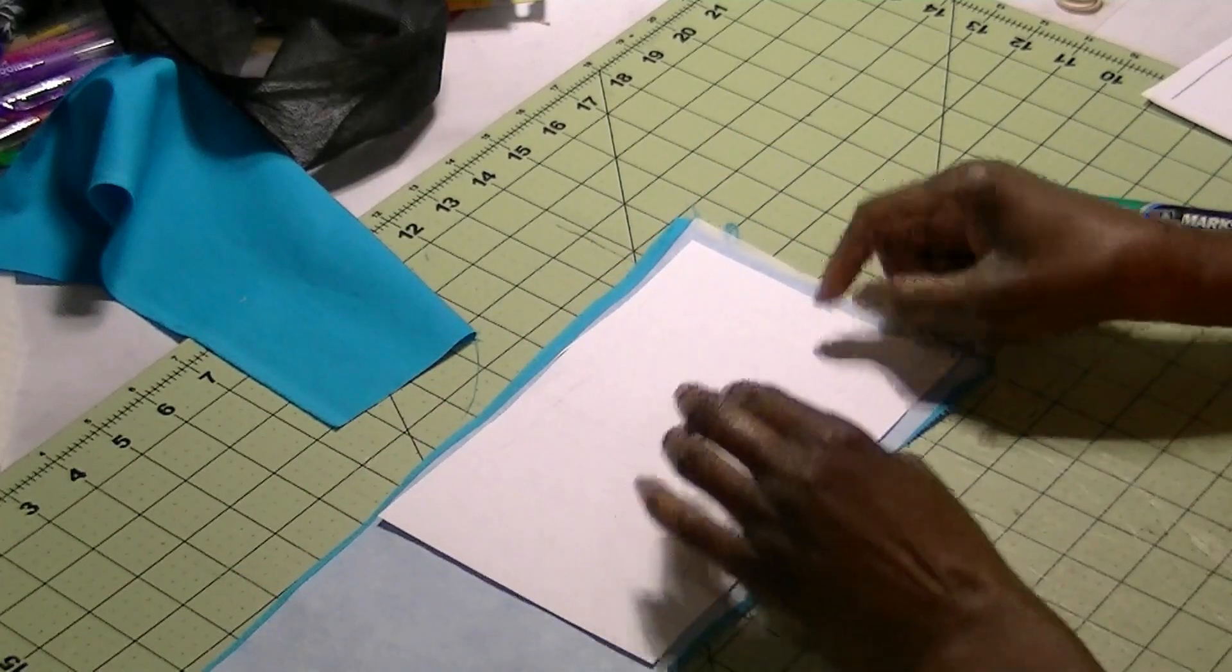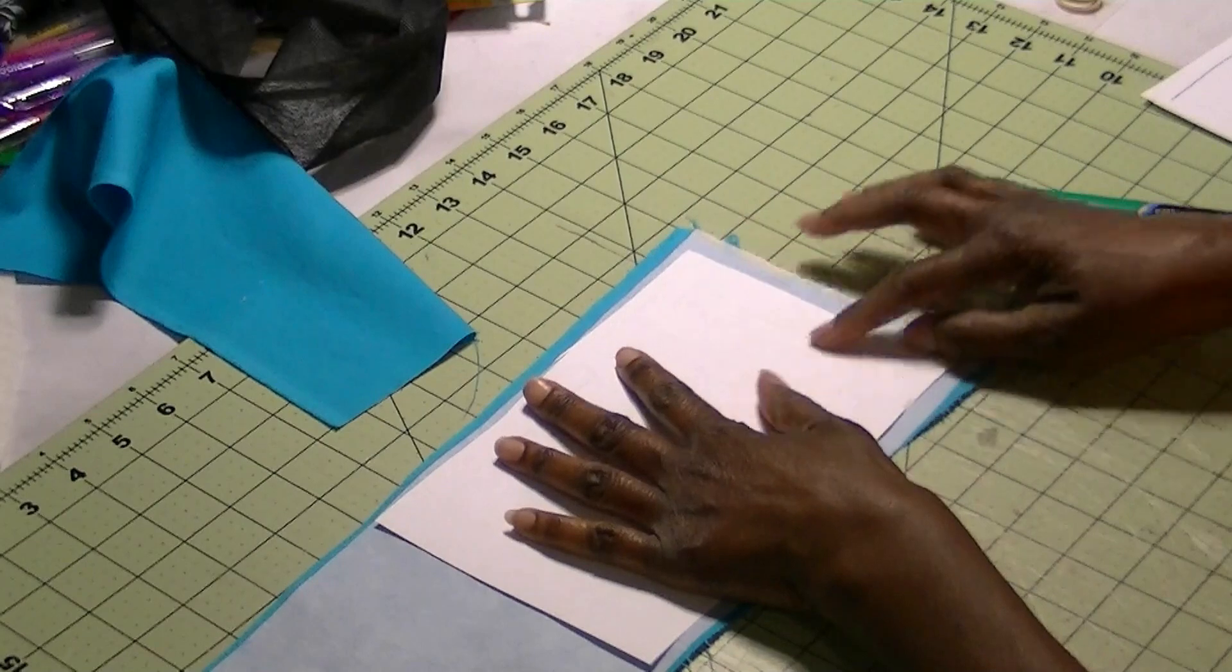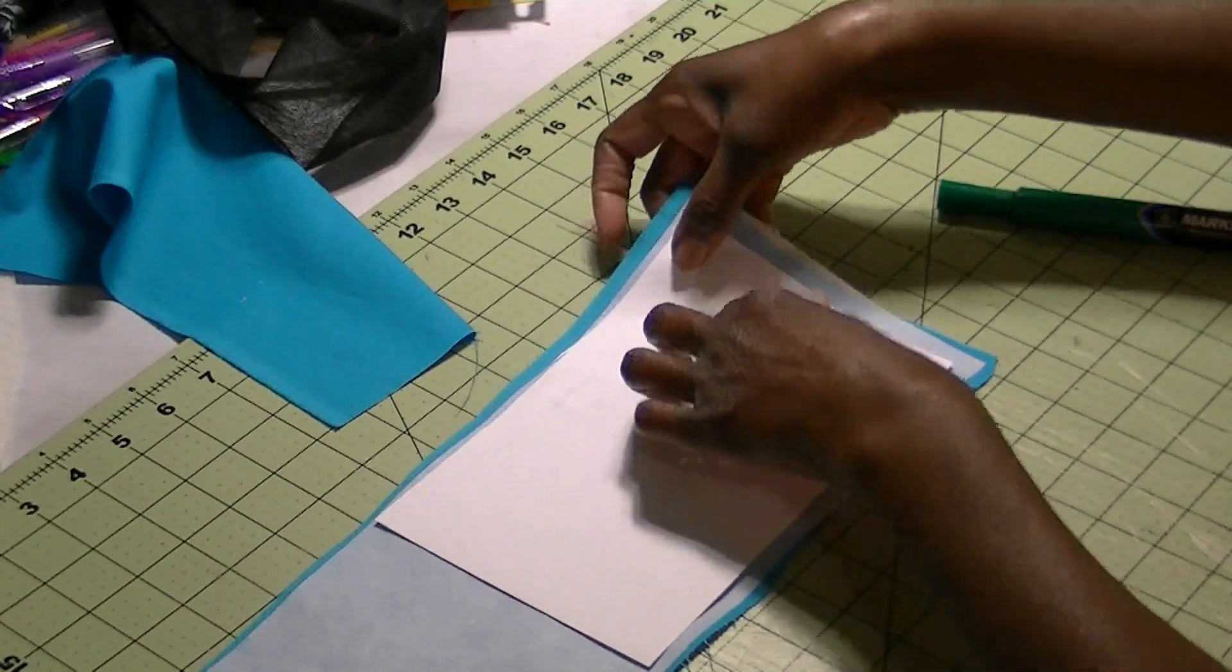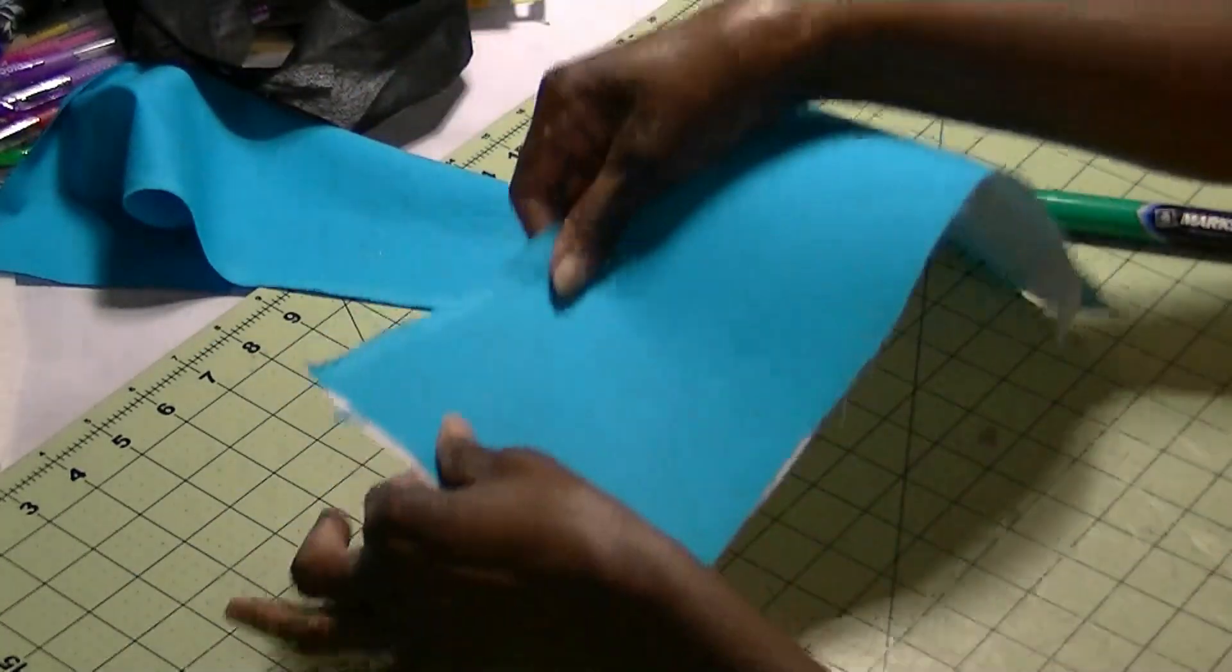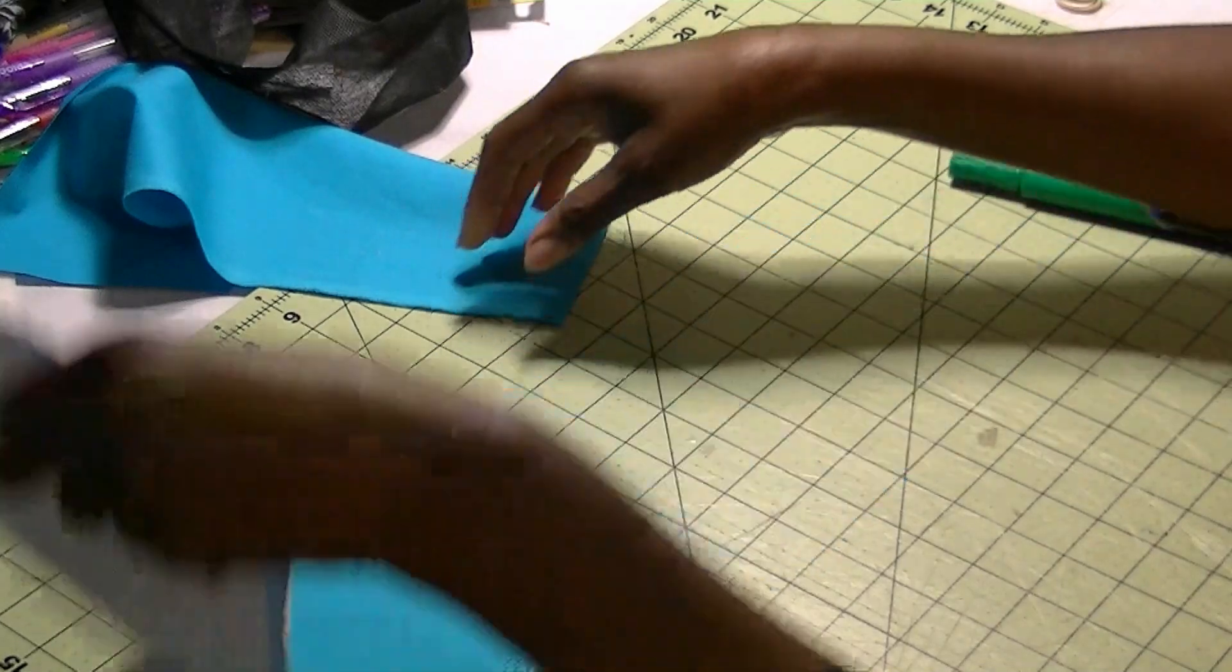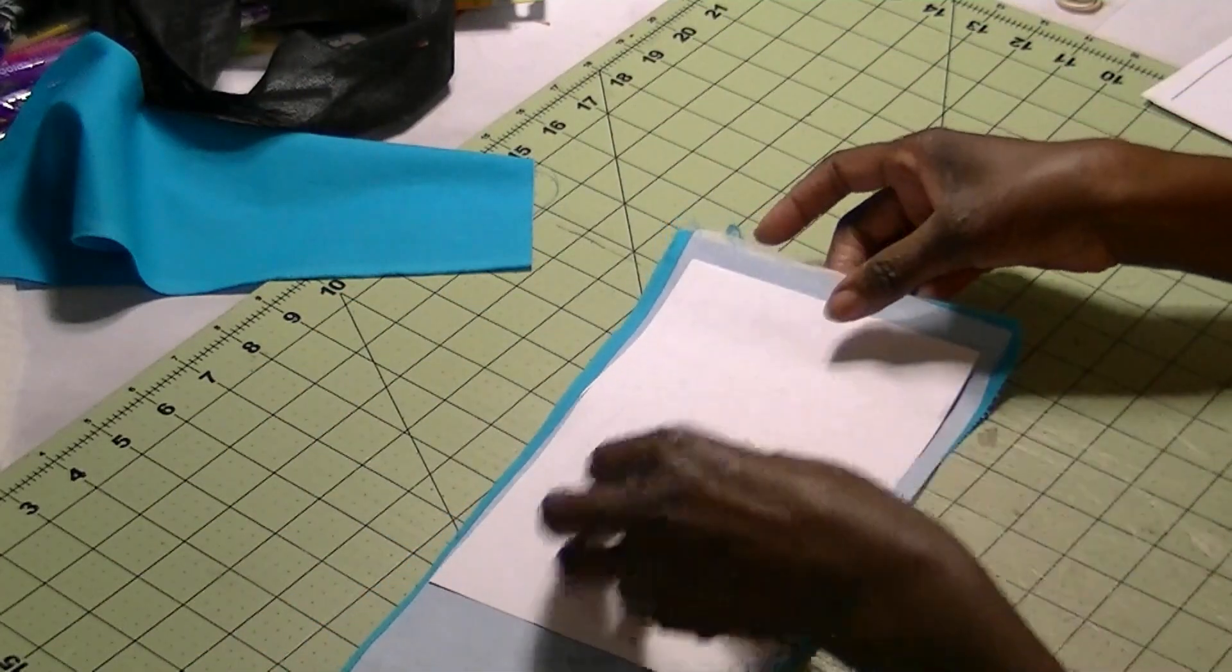The reason you're flipping them is because once you draw them out and you cut them out, you're going to be taking this and putting it down this way. So you want to make sure your letters are not flipped on the wrong side.